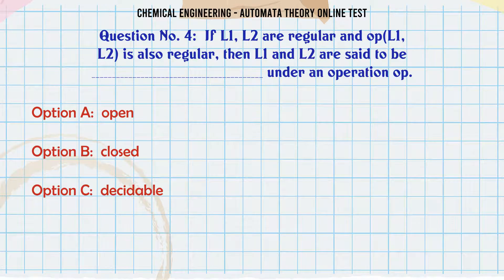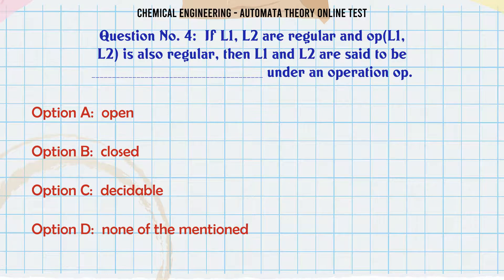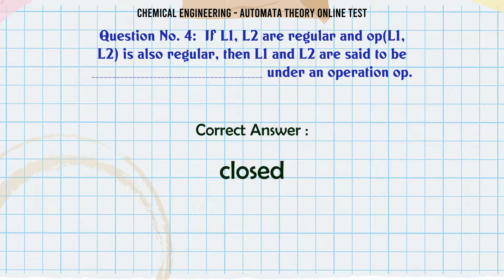If L1 and L2 are regular, and OP(L1, L2) is also regular, then L1 and L2 are said to be under an operation OP: A. Open, B. Closed, C. Decidable, D. None of the mentioned. The correct answer is: Closed.